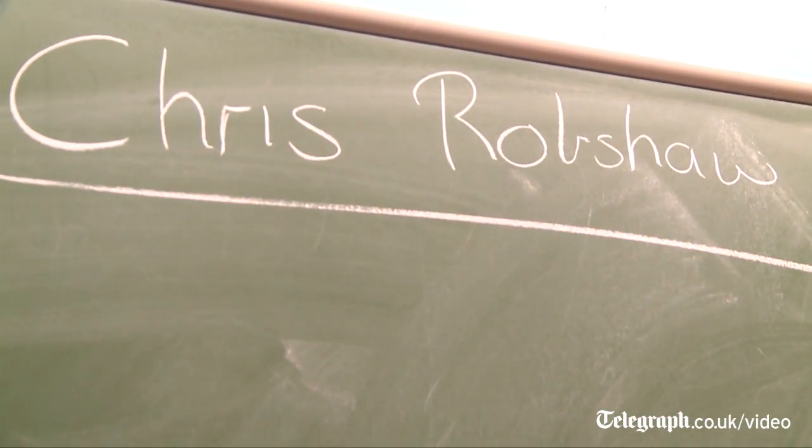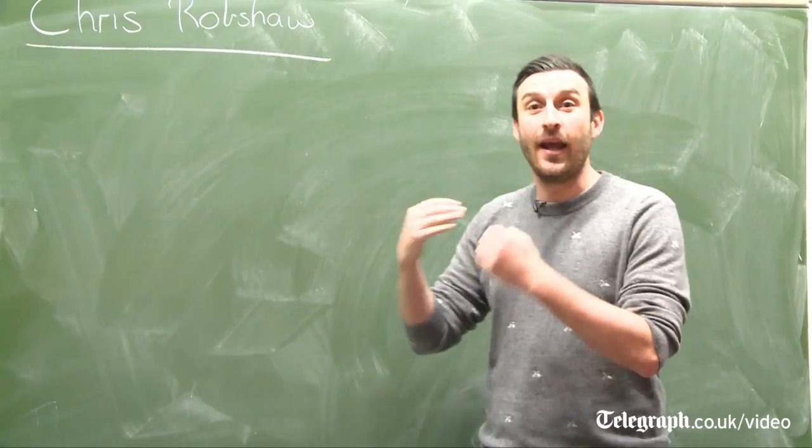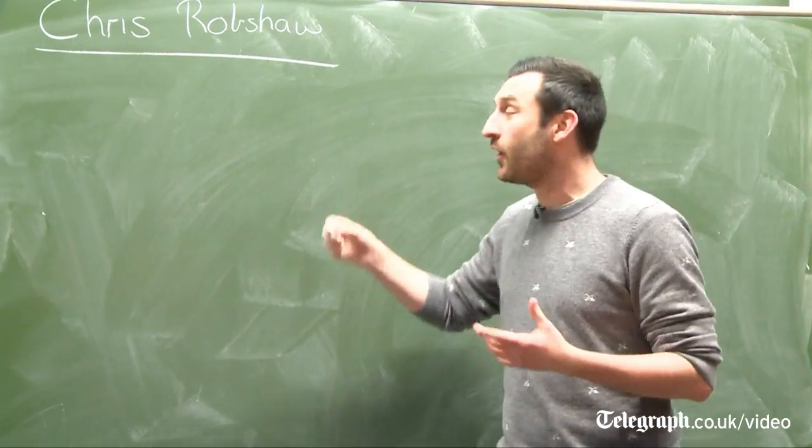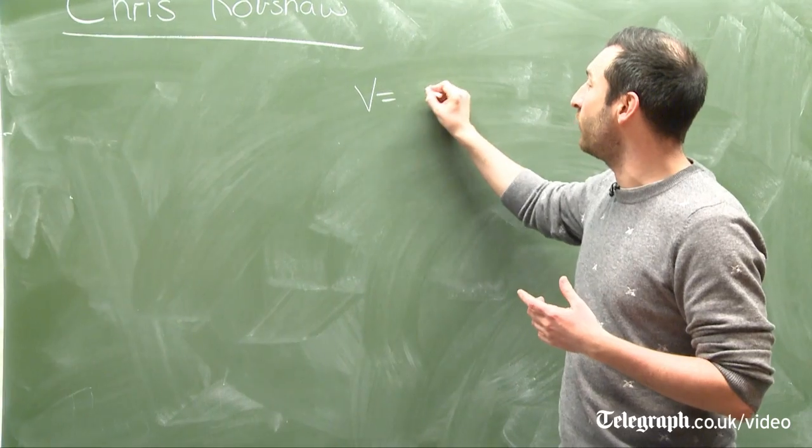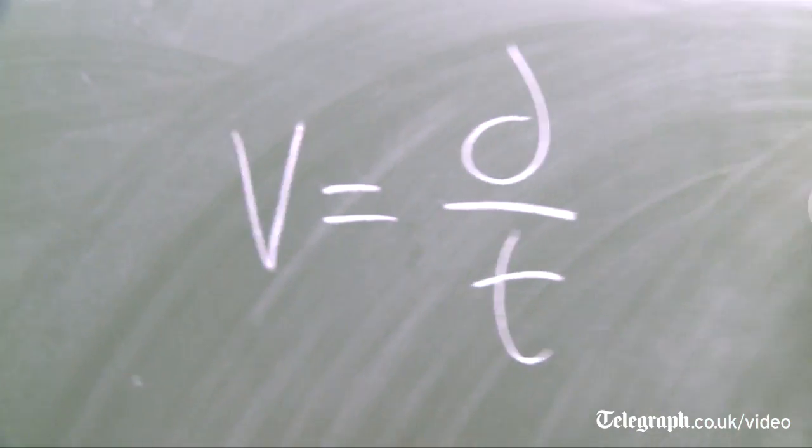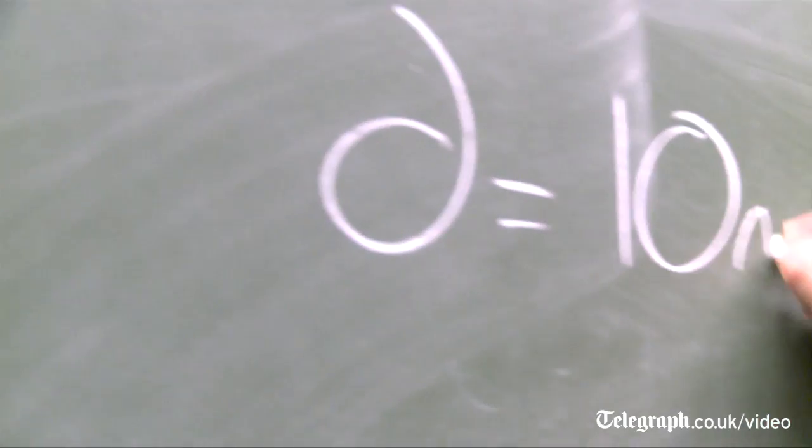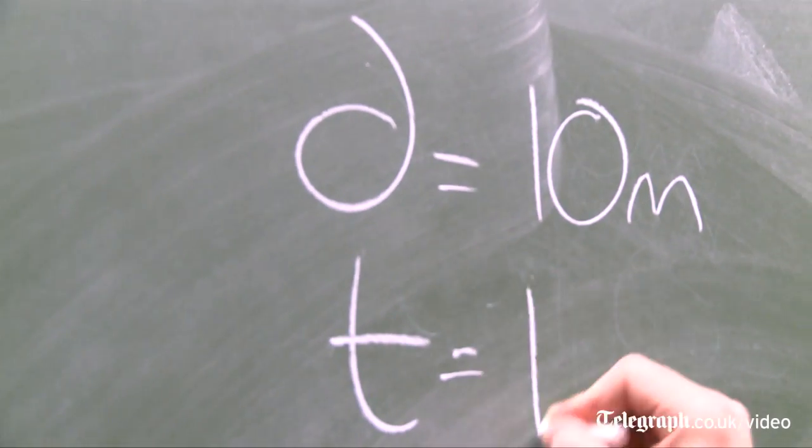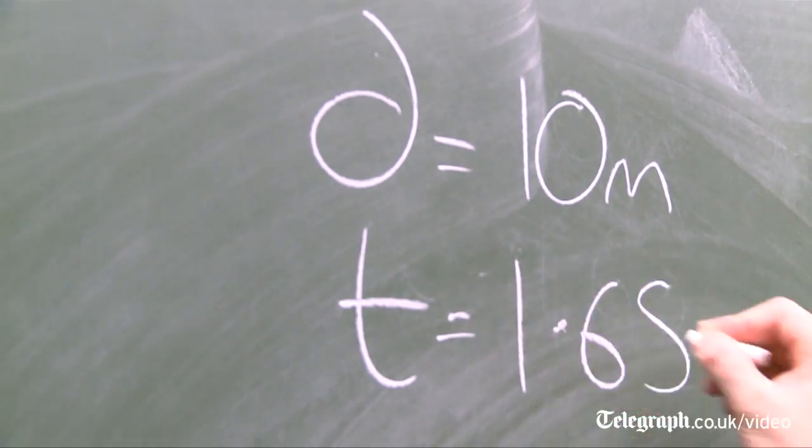First thing to do is we're going to look at his velocity in one of these tackles. To do that we're going to use the equation velocity equals distance over time. We know from some of the data on Chris that he travels a distance of 10 metres in 1.65 seconds.